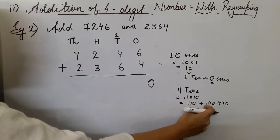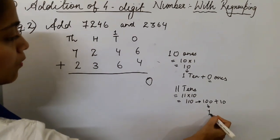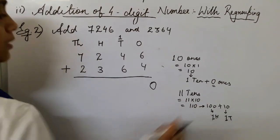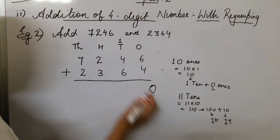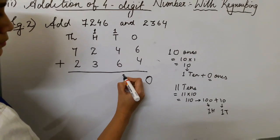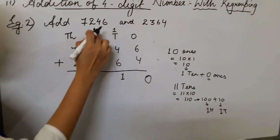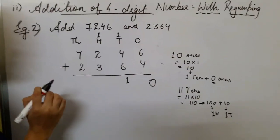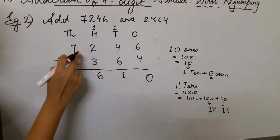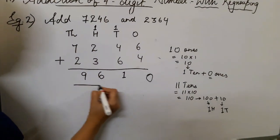Eleven tens means 110, which is one hundred plus one ten. So we write 1 in the tens place and carry 1 to the hundreds. Then: 1 hundred (carried) plus 2 hundreds plus 3 hundreds gives 6 hundreds. Next, add the thousands: 7,000 plus 2,000 gives 9,000.